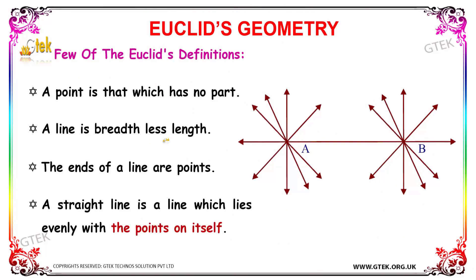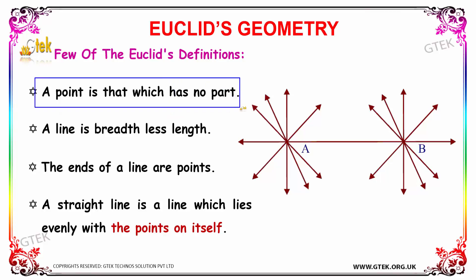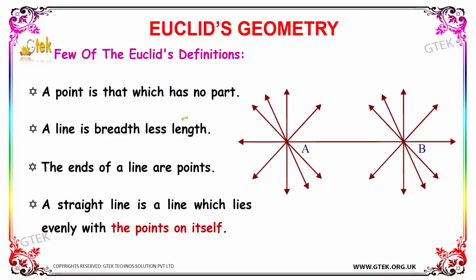Now let's see a few of Euclid's definitions. The first definition is about a point: a point is that which has no part at all. The second statement is that a line is breadthless length. The ends of a line are considered as points. A straight line is a line which lies evenly with the points on itself.